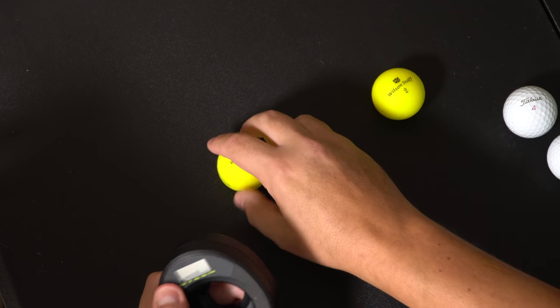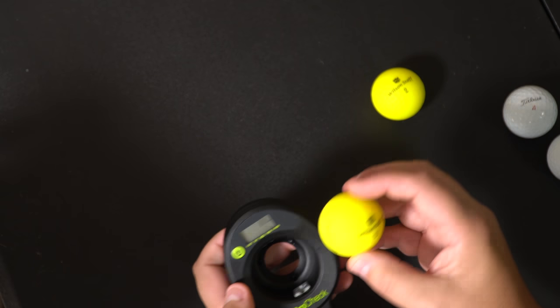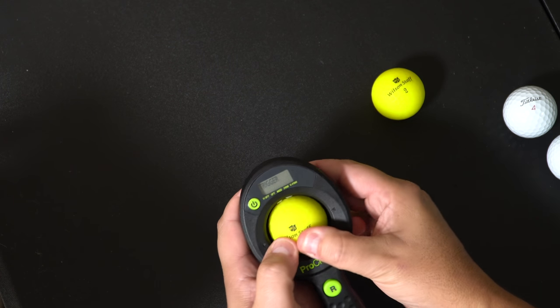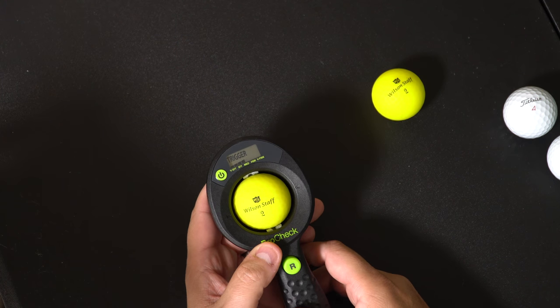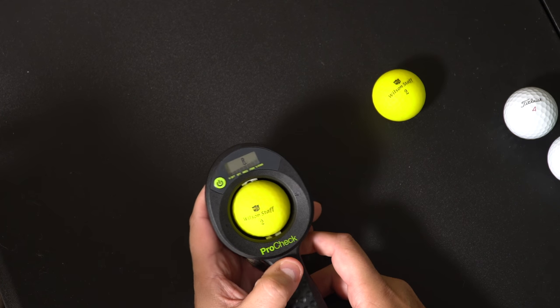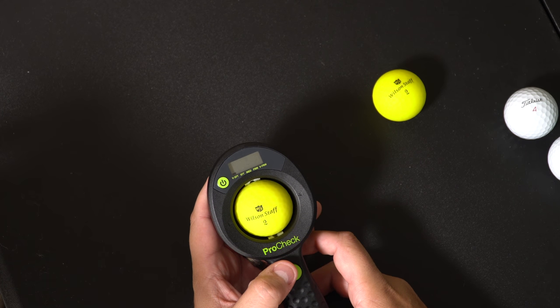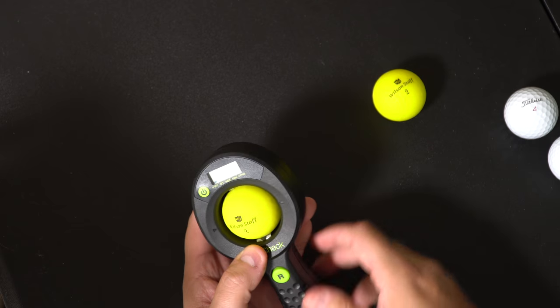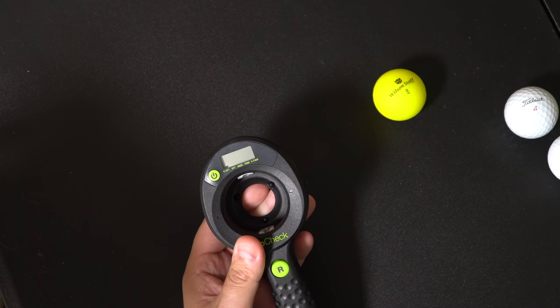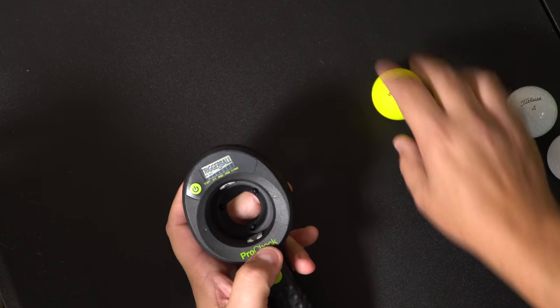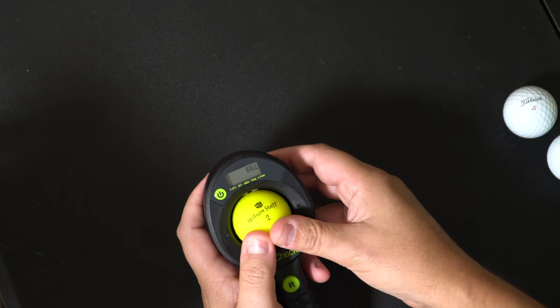Now we'll do the same thing with a very super soft ball in general. Regular Wilson staff, pull the trigger, press the release. It says very soft. It says drop the ball in. That one's cold as well.